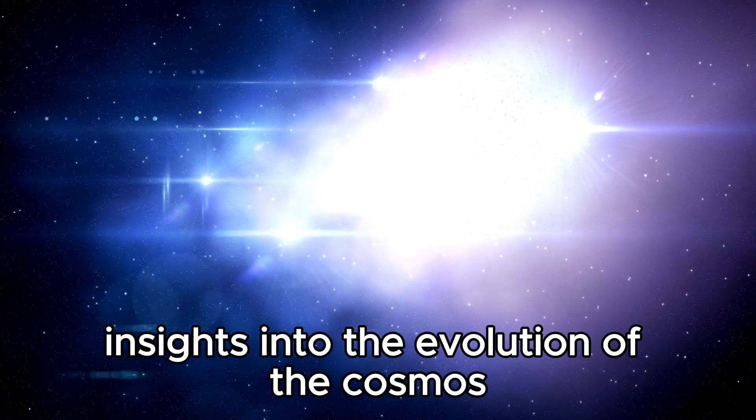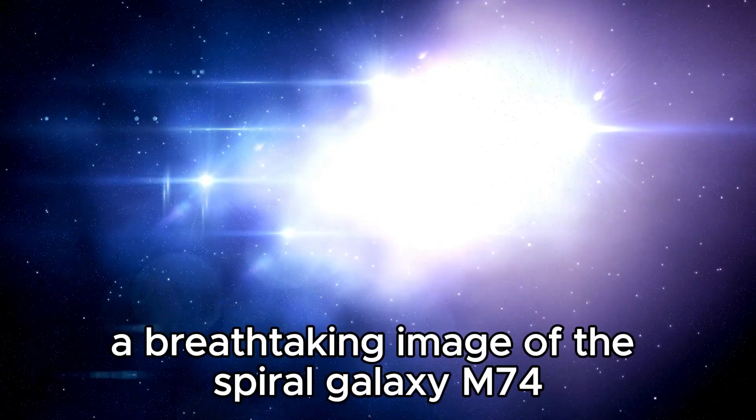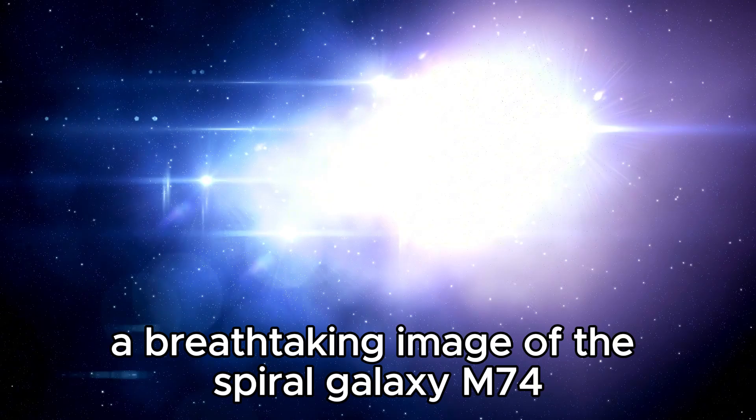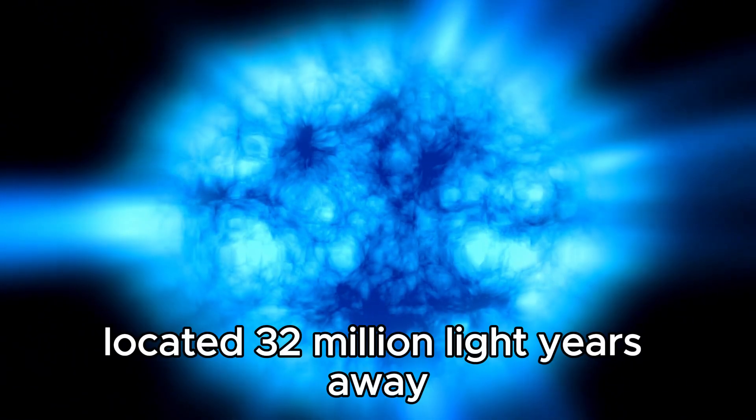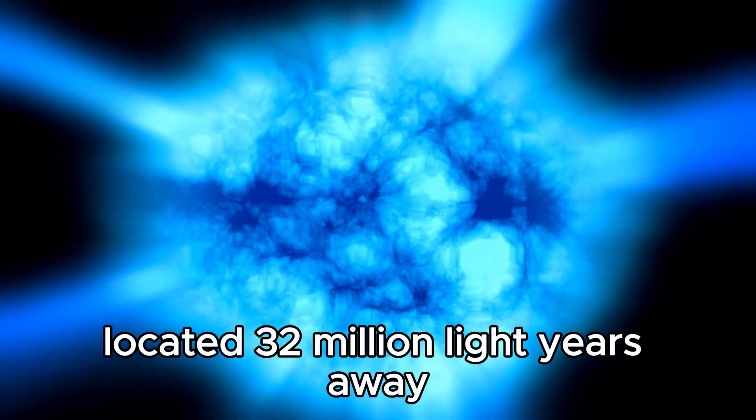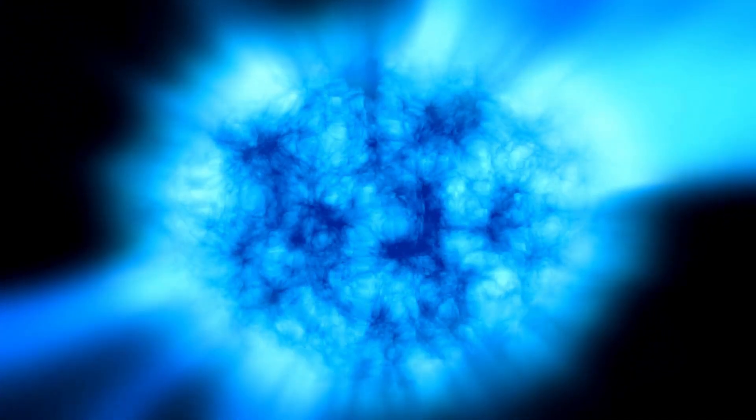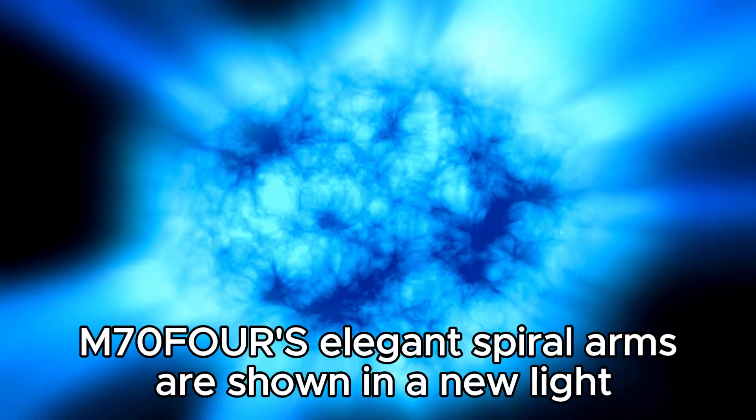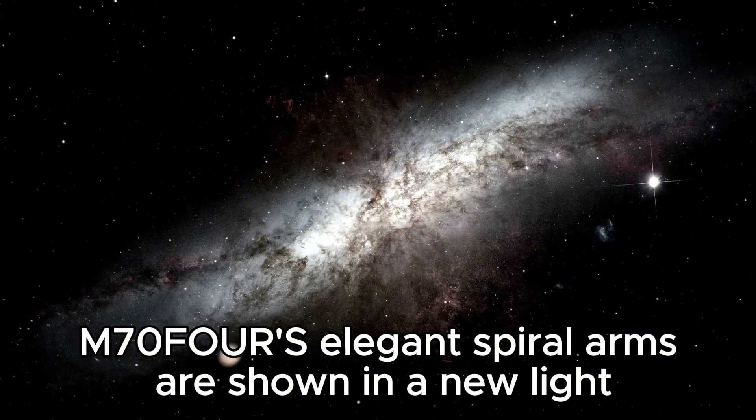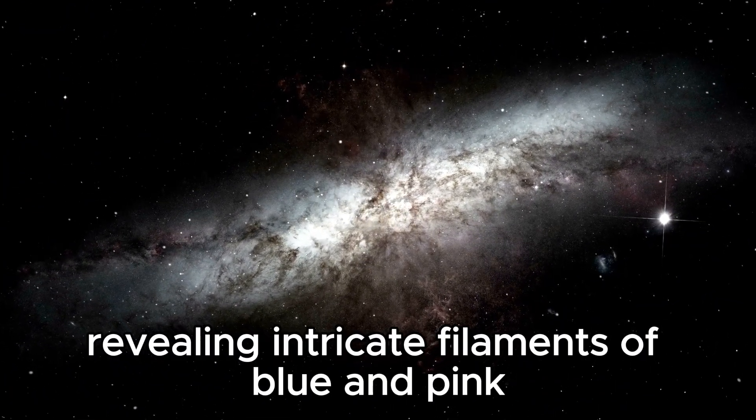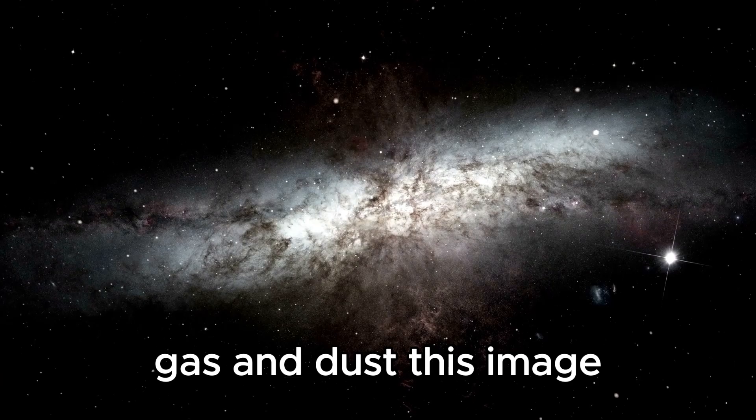A breathtaking image of the spiral galaxy M74, located 32 million light-years away in the constellation Pisces, has also been captured. M74's elegant spiral arms are shown in a new light, revealing intricate filaments of blue and pink gas and dust.